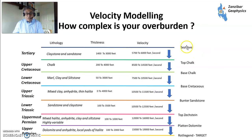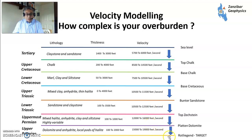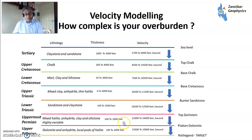Looking at complex geology from the Southern Gas Basin just off the eastern coast of England between England and the Netherlands: you've got Tertiary, Upper Cretaceous chalk which is very fast, then you slow down for the Lower Cretaceous mudclay and siltstone, then the Triassic with clay and anhydrite, thin halites, then Lower Triassic sandstone and claystone. Then the Zechstein split by the platinum dolomite major dolomite layer — above that mainly halite, anhydrite, clay, siltstone, highly variable. Below that much faster velocities with dolomite anhydrite and local pods of halite. You need to get to the Rotliegend Permian target — that's the most complicated you're going to get.